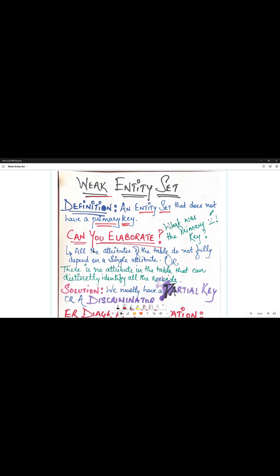So let's elaborate what I mean by that. It's basically that all the attributes of the table do not fully depend on a single attribute, or there is no attribute in the table that can distinctly identify all the records. And what do we call such an attribute? We call it a primary key.